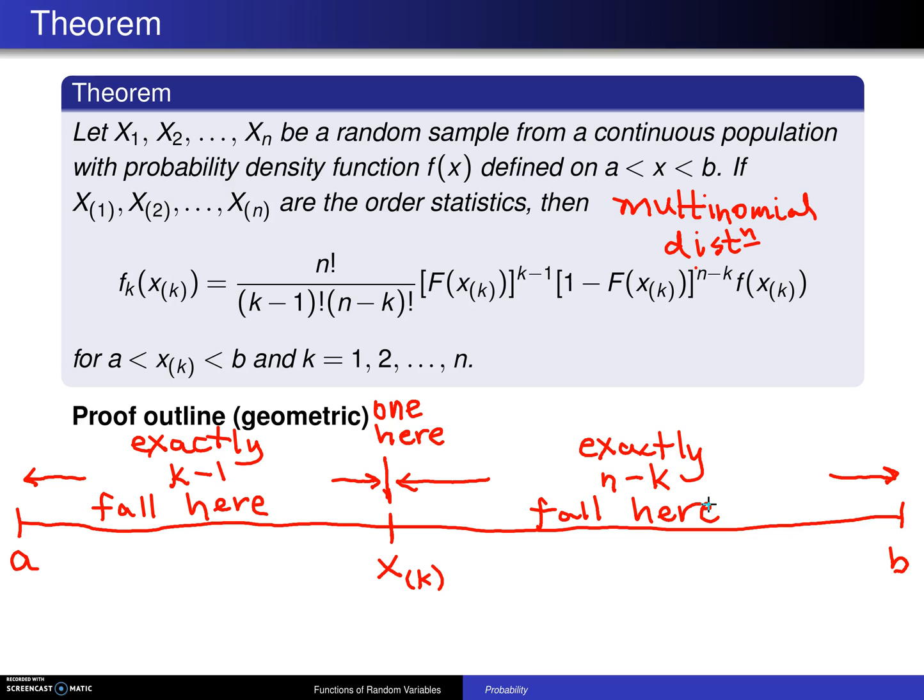So, as a quick check, if k minus 1 falls here, 1 falls here, and n minus k fall here, if you add up k minus 1 plus 1 plus n minus k, that accounts for all n of the observations.